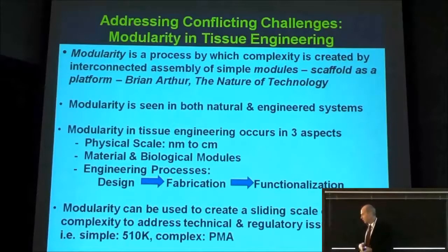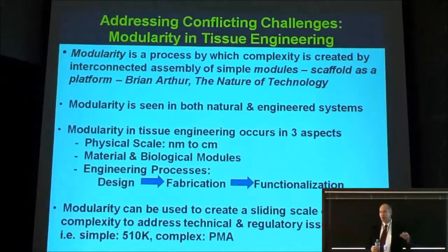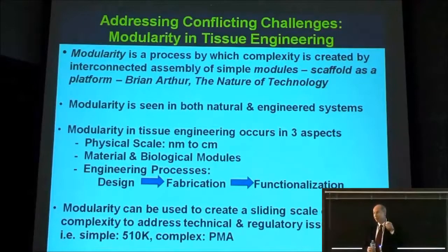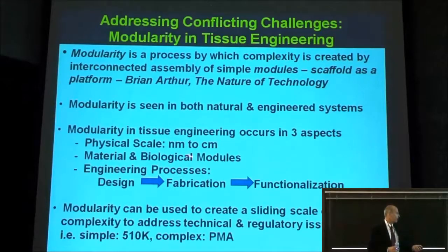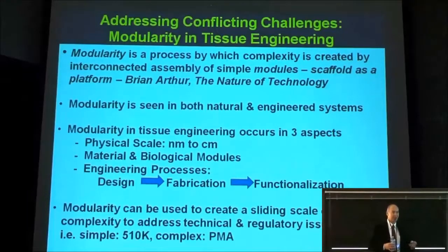Modularity is not a new concept — you see it all the time in both natural systems and engineered systems. I think modularity in tissue engineering on a physical sense occurs in three aspects. One is obviously the physical scale — from tissue structure function at the nanometer to centimeter scale. The other is that we use both materials and biologics together, so we have material modules and biologic modules that we put together to create a tissue regeneration system. And the processes themselves are modular — designing scaffolds, building them, and functionalizing them with growth factors or coatings.